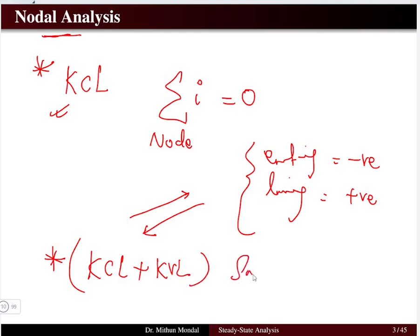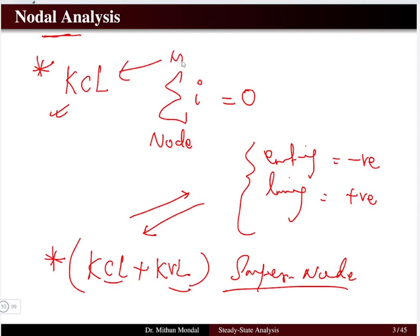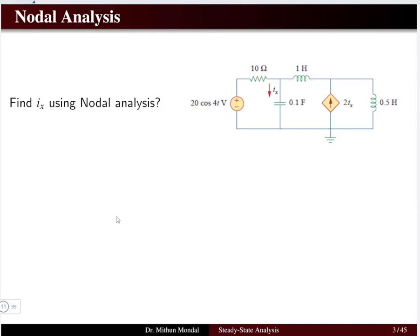We have already covered these concepts for DC circuits; now we will see them for AC circuits. Whenever you have a super node problem, both KCL and KVL are required. For a normal nodal analysis problem, only KCL is used. Let us understand nodal analysis with this problem: determine the value of I_X using nodal analysis, where I_X is the current flowing through the 0.1 Farad capacitor.